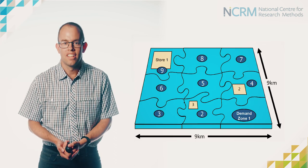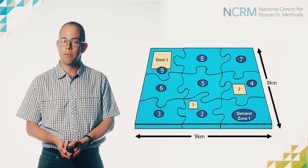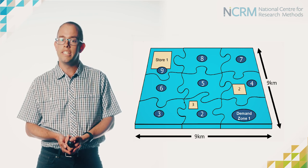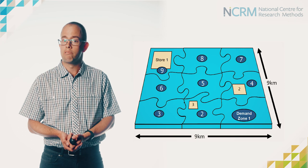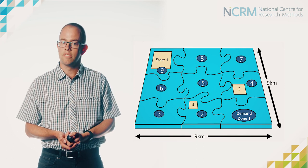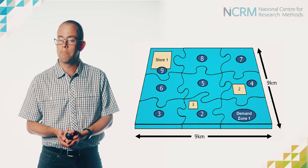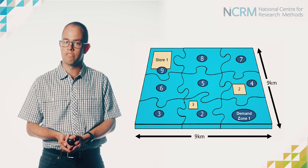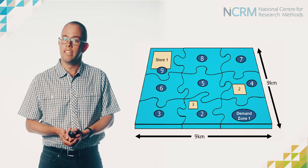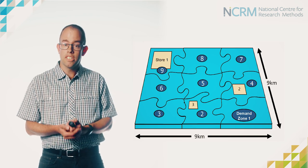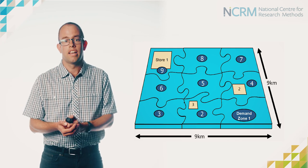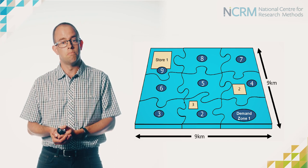Welcome back. Hopefully you've had a chance to work through that accompanying activity. It got you to think about some of the decisions that we need to make when we're trying to model or predict flows. In the example you were working with consumer flows, thinking about where people are most likely to shop for their groceries. And actually underpinning that is essentially a spatial interaction model — the decisions that you've made are exactly the same decisions that we ask a spatial interaction model to make.